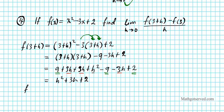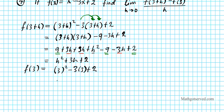Now what is f of 3? We simply plug in 3 into this function, so we're going to have 3 squared minus 3 times 3 plus 2. Simplifying: 3 squared is 9, minus 9 plus 2. The final answer is 2. Now we're going to use this result and this result in our limit.